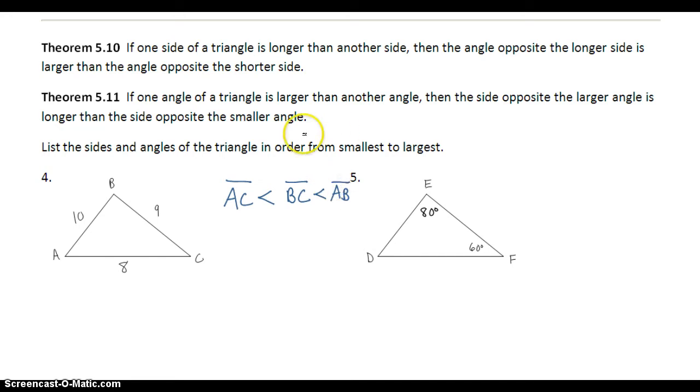But now I'm going to use theorem 5.10 and 5.11 to figure out my angles. If one side of a triangle is longer than the other side, then the angle opposite the longer side is larger than the angle opposite the shorter side. That's a mouthful, but what it's essentially saying is 8 is the shortest side, so the angle opposite of 8 is going to be the smallest angle. So if AC is the shortest side,